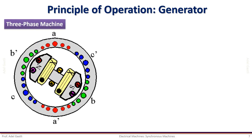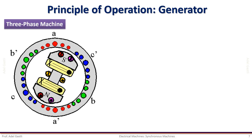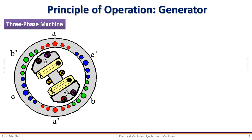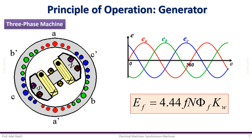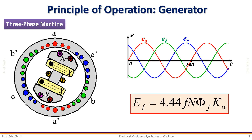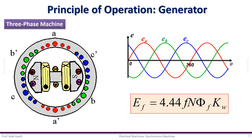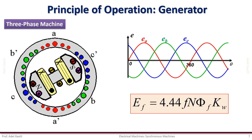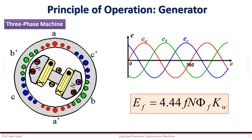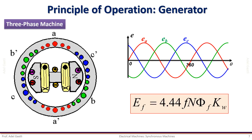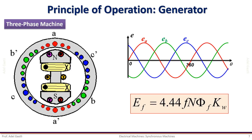Now let us analyze the three-phase machine. The rotating flux will link the armature windings AA', BB', and CC', inducing voltages in the stator winding as shown. These three-phase induced voltages have the same magnitude but are phase shifted by 120 electrical degrees. The frequency of variation of the induced voltages is directly proportional to the rotor speed, while the amplitude is proportional to both the speed and the feed flux. For constant motor speed — the case in generator applications — the induced voltage can be controlled by adjusting the excitation current.